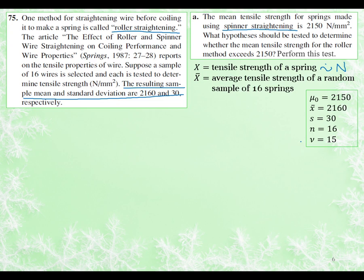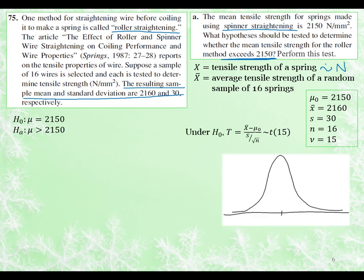So we can then start by writing our null and alternative. Our null hypothesis is that the mean is 2150. And the question here says what hypotheses should be tested to determine whether the mean tensile strength for the roller method exceeds 2150. So there we get our direction for the alternative. So we want to know if the mean is more than 2150. So now we can look at our, we already know what our test statistic is going to be. And we know that under the null hypothesis, that test statistic has a t-distribution with 15 degrees of freedom. And we know the t-distribution looks very similar to the normal distribution. So I have my sketch here. Let's pretend this is now for the t-distribution.